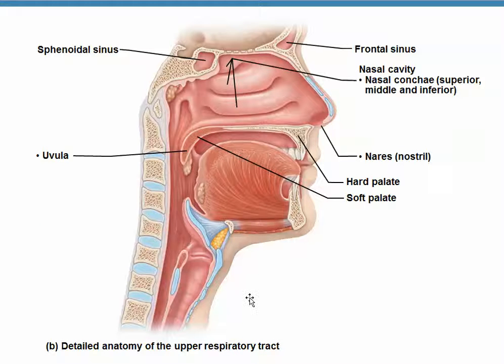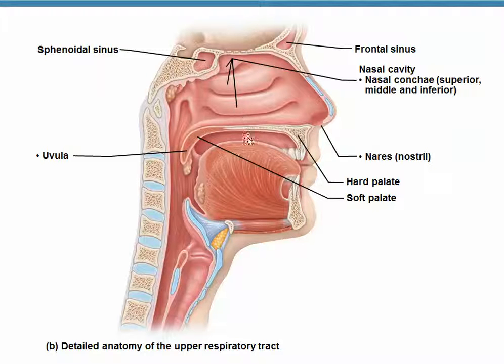This is the sagittal section of the head. Here we have the nasal cavity and here we have the oral cavity. Here is the mouth with the lips.